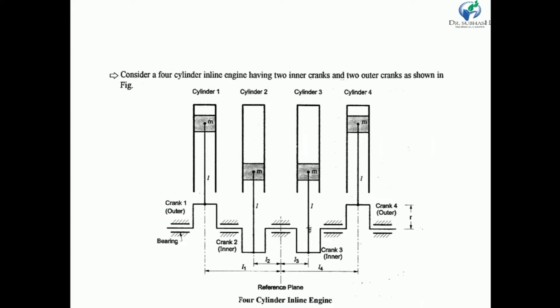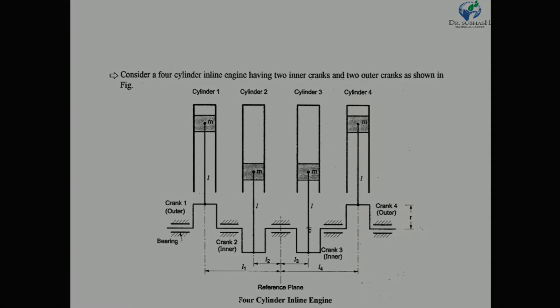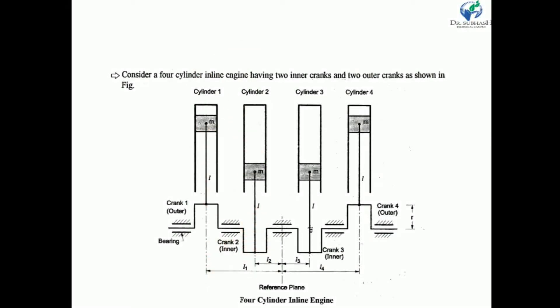When the axis of all cylinders are in the same plane — you can clearly see that this is the axis of cylinder 1, this is the axis of cylinder 2, axis of cylinder 3 and axis of cylinder 4, all are in a vertical plane — and on the same side of the axis of the crankshaft, it is clearly seen that all cylinders are on the same side of the axis of the crank.